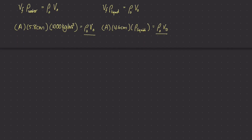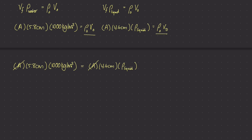Setting those two relationships equal to one another, we end up with one equation. The area terms cancel since it's the same block in both cases. What we're left with is: submerged depth in water × mass density of water = submerged depth in unknown liquid × mass density of the unknown liquid. There is only one unknown in this equation, so we can solve for ρ_liquid. That turns out to be about 1,261 kilograms per meter cubed.